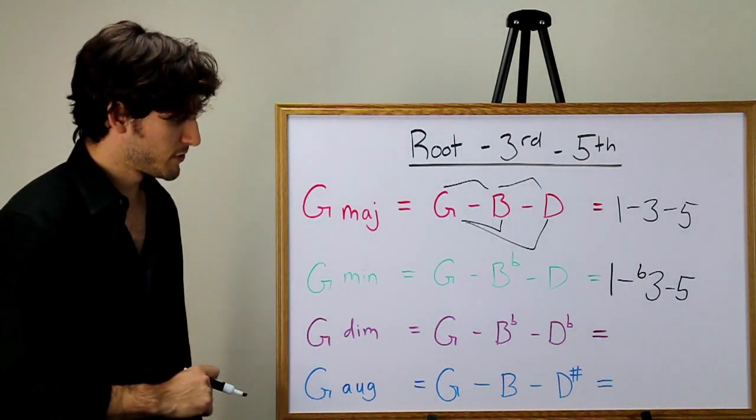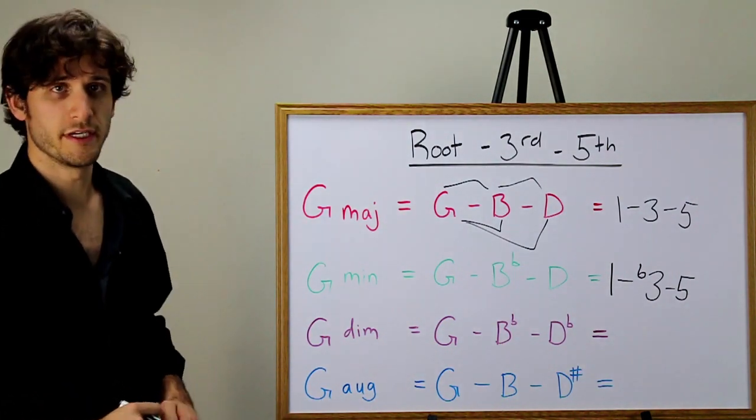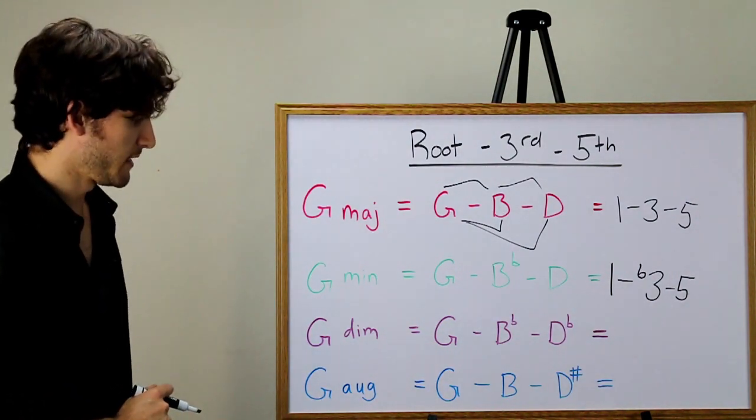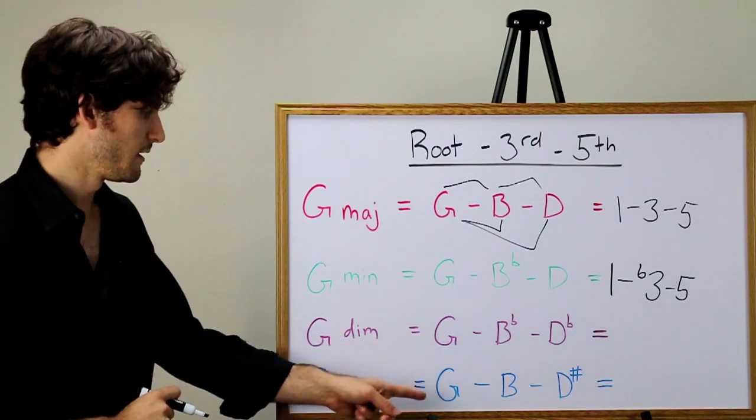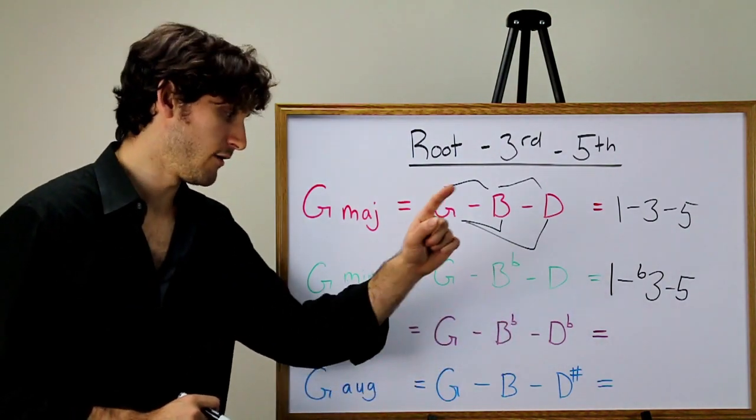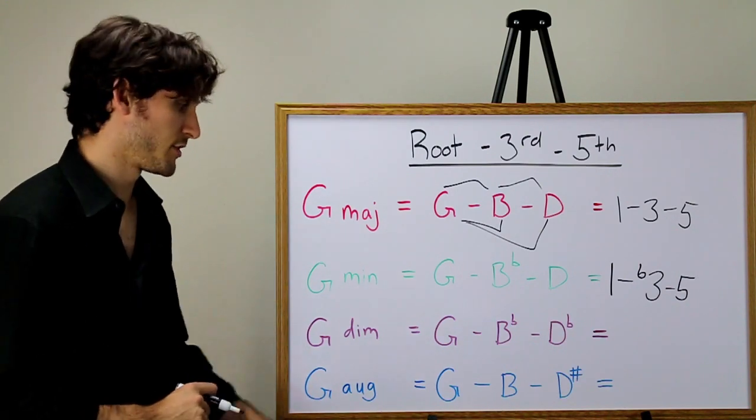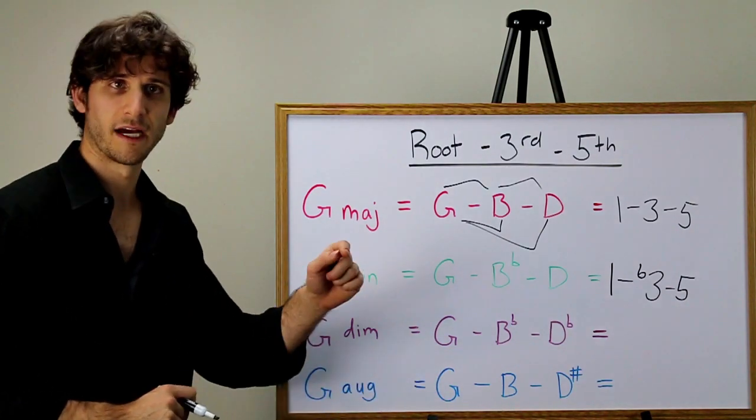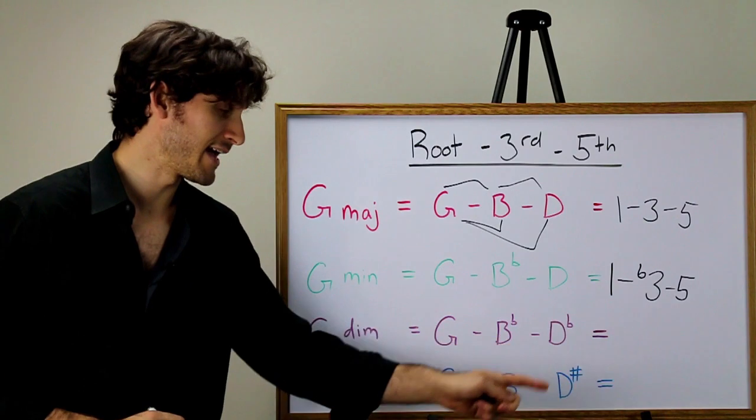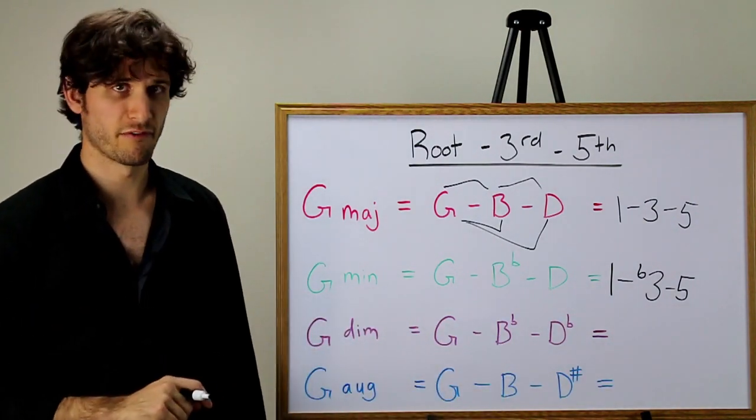Let's go through the diminished and augmented chords as well. The G diminished triad has G, B flat, and now another alteration, D flat. G is the root, B flat, a minor third away from G, and D flat, a diminished fifth away from G.